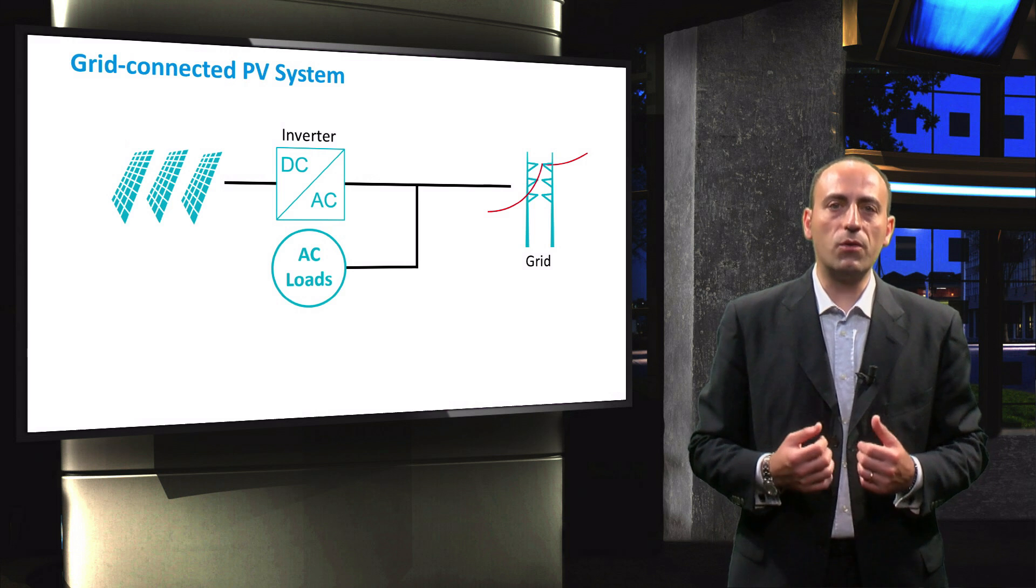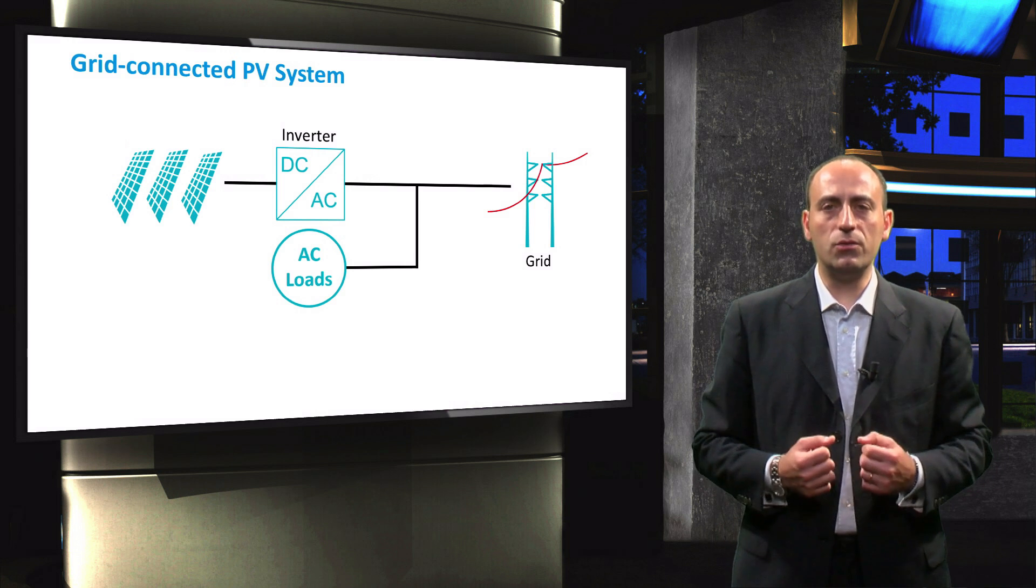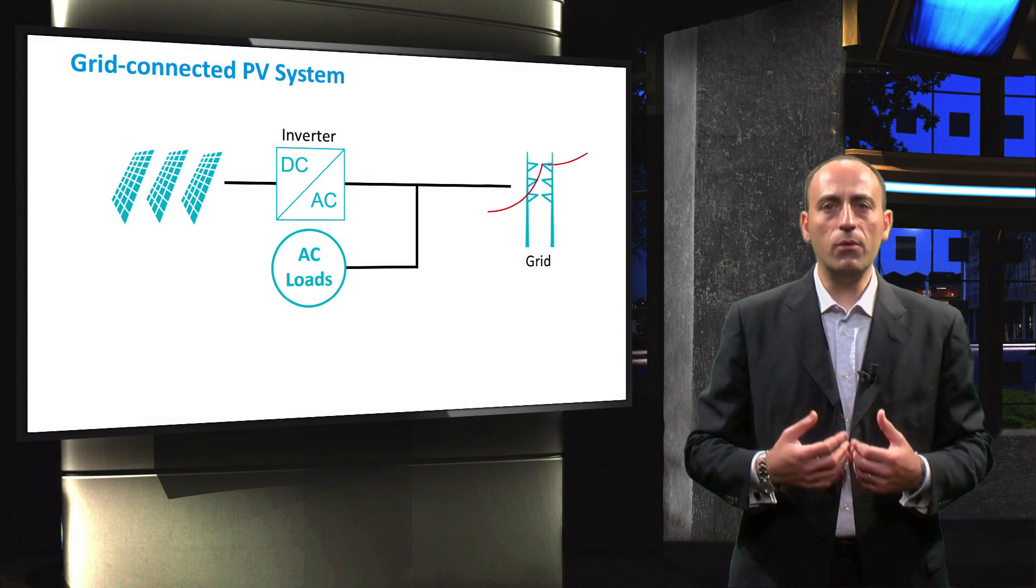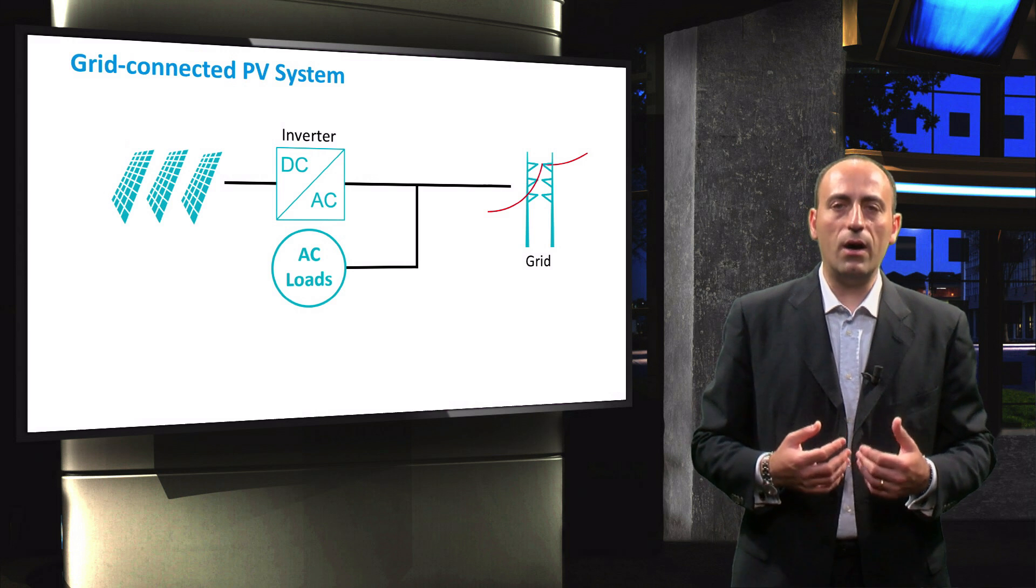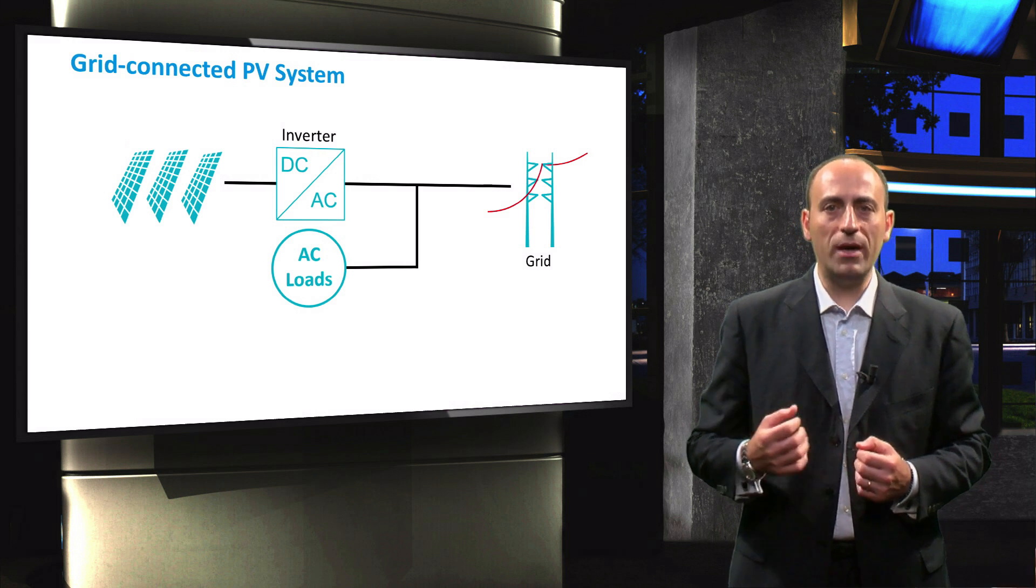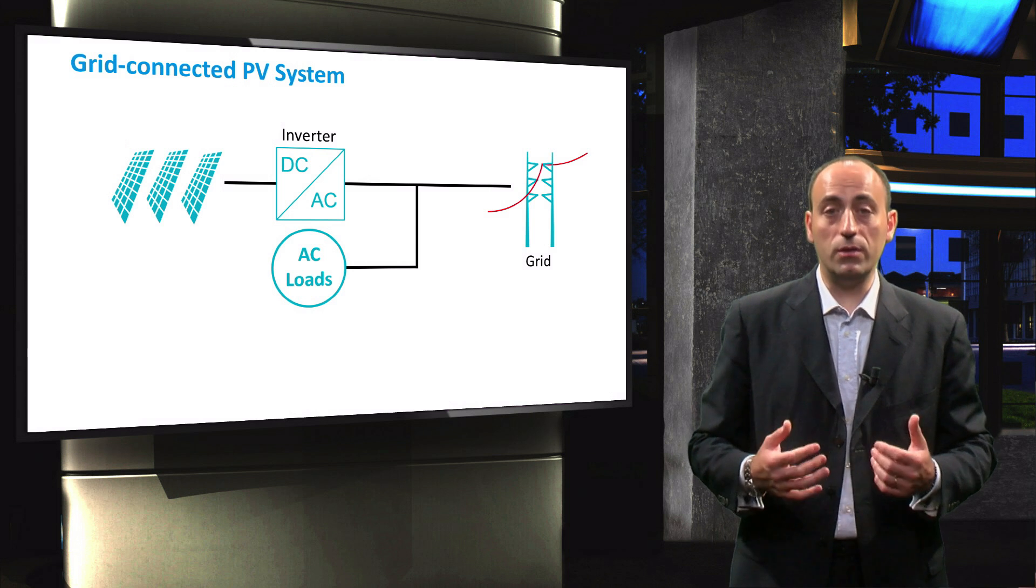In a typical grid-connected PV system, the modules are connected to the grid and to the loads through an inverter. The loads are either powered by the grid or by the PV modules, depending on the conditions during the day.